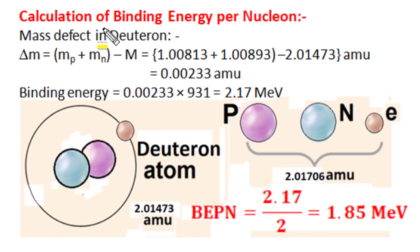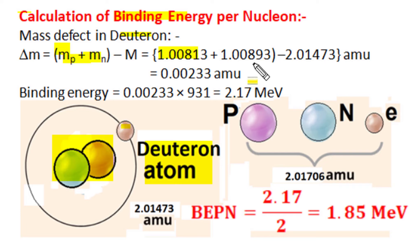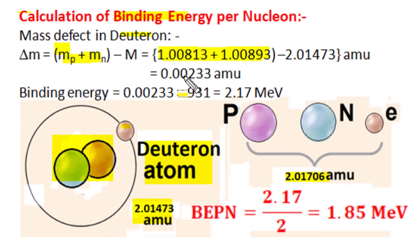The first nucleus composition for binding energy calculation is the deuteron. In the deuteron nucleus there is a proton and neutron combination. If this nucleus is segregated into individual nucleons, the proton mass is roughly 1.00813 AMU and the neutron mass is 1.00893 AMU. Their sum total mass of 2.01706 AMU is more than the mass of the deuteron nucleus, which is 2.01473 AMU. The mass defect in deuteron formation is therefore 0.00233 AMU.